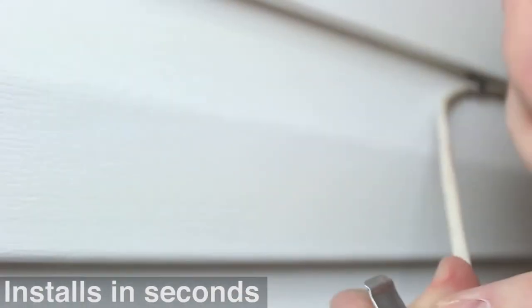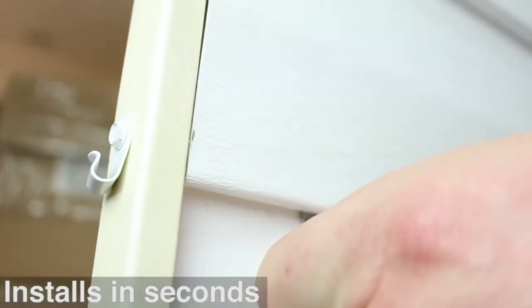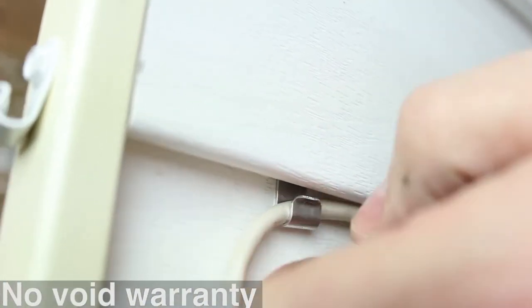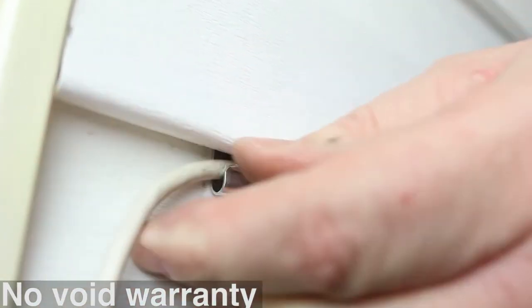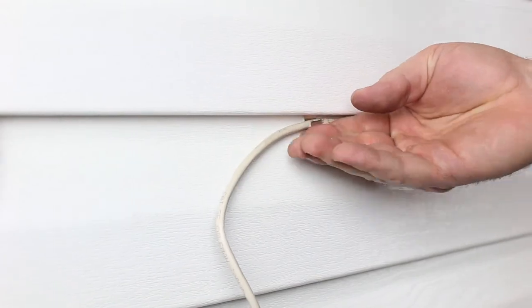The siding clip is made out of high quality weather resistant aluminum, it installs in seconds, and there are no voided manufacturer warranties from screws or nails. If you've got siding, there's no other product on the market like this.